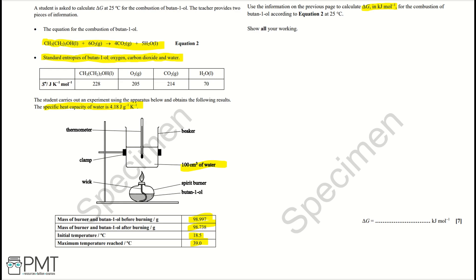Firstly, let's work out the energy, or Q, in joules and then convert to kilojoules per mole. Q equals MC delta T. So we can work out Q because we've got the mass of water is 100 centimeters cubed, or 100 grams.